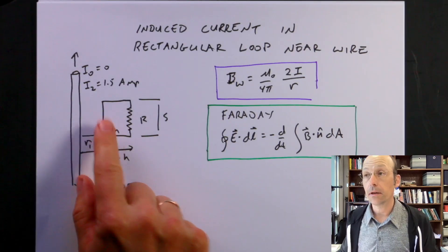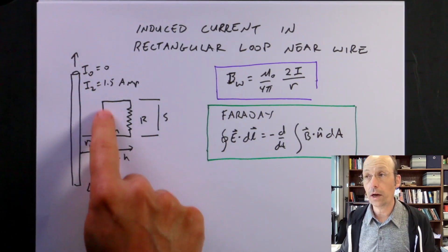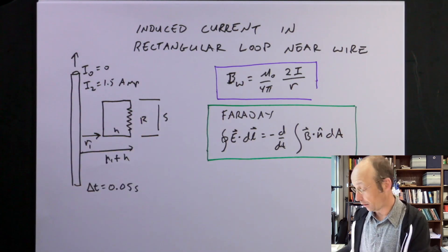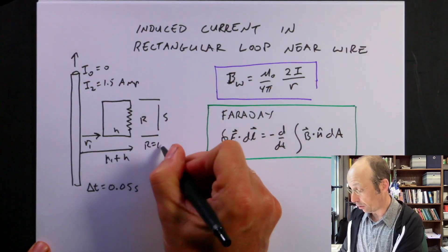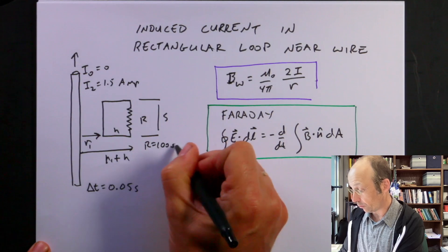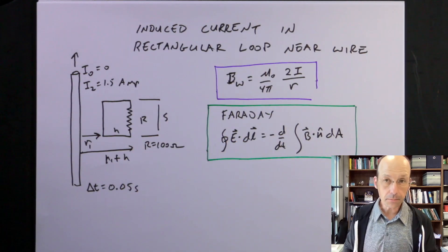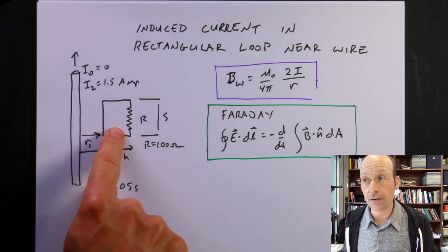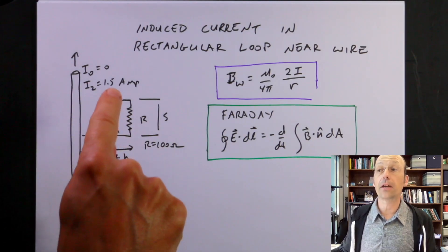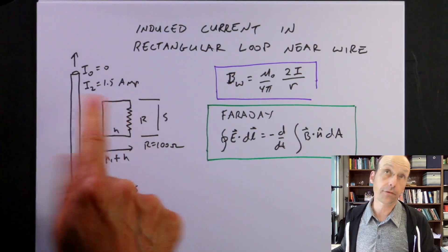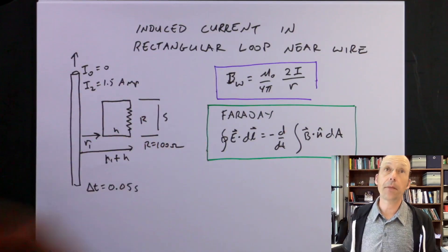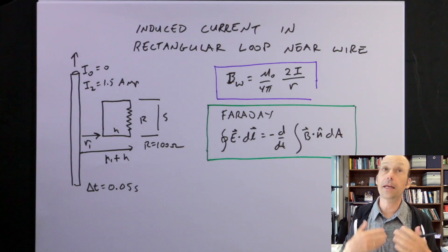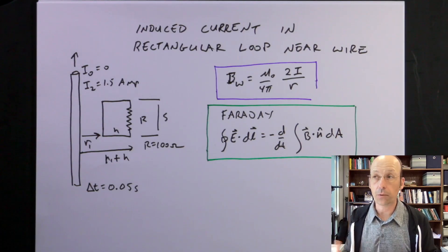Near that wire is a square loop with a resistor — R equals 100 ohms. Because there's a changing magnetic field through this loop, there will be an induced current. There's an electric field there, and from that we can find the EMF over the loop, and from the EMF we can find the current.